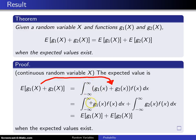Notice that these two integrals here can be broken out into g1 f of x dx and g2 f of x dx. This first integral is the expected value of g1 of X. The second integral is the expected value of g2 of X. And so when those expectations exist, we have a proof of the general result.